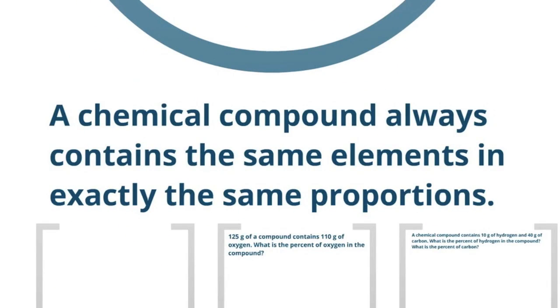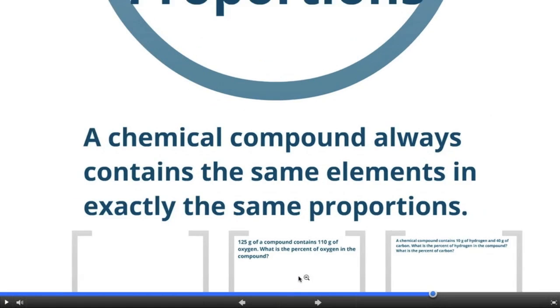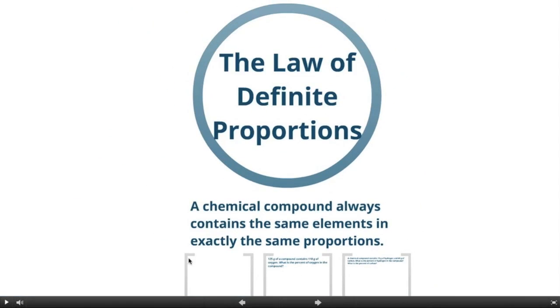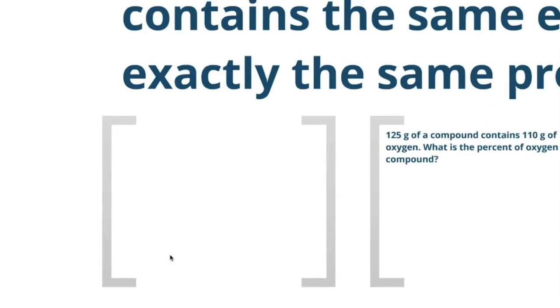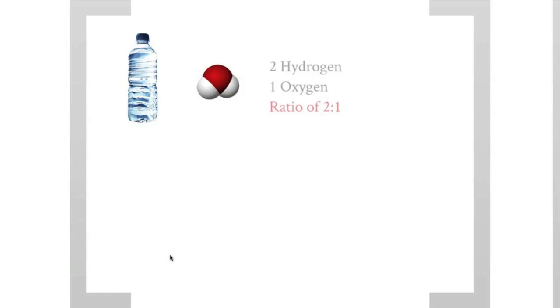To reiterate the Law of Definite Proportions: a chemical compound always contains the same elements in exactly the same proportions. For example, if we took a bottle of water and grabbed a water molecule from it, we would see that it has two hydrogen atoms and one oxygen atom — a ratio of hydrogen to oxygen of 2 to 1.